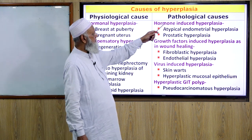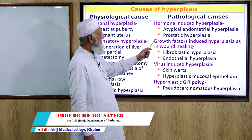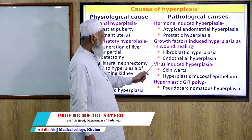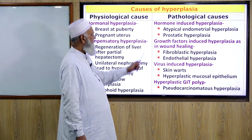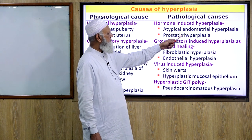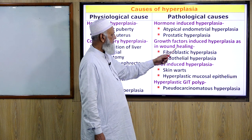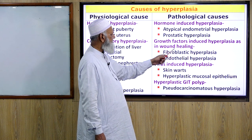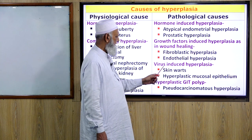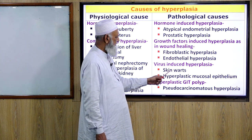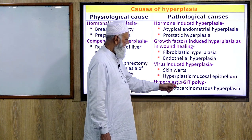Pathological causes of hyperplasia include hormone-induced, growth factor-induced, and virus-induced hyperplasia, as well as hyperplastic GIT polyps. Hormone-induced examples include atypical endometrial hyperplasia and prostatic hyperplasia. Growth factor-induced hyperplasia occurs in wound healing, including fibroblastic hyperplasia and endothelial hyperplasia. Virus-induced hyperplasia causes skin warts and hyperplastic mucosal epithelium.